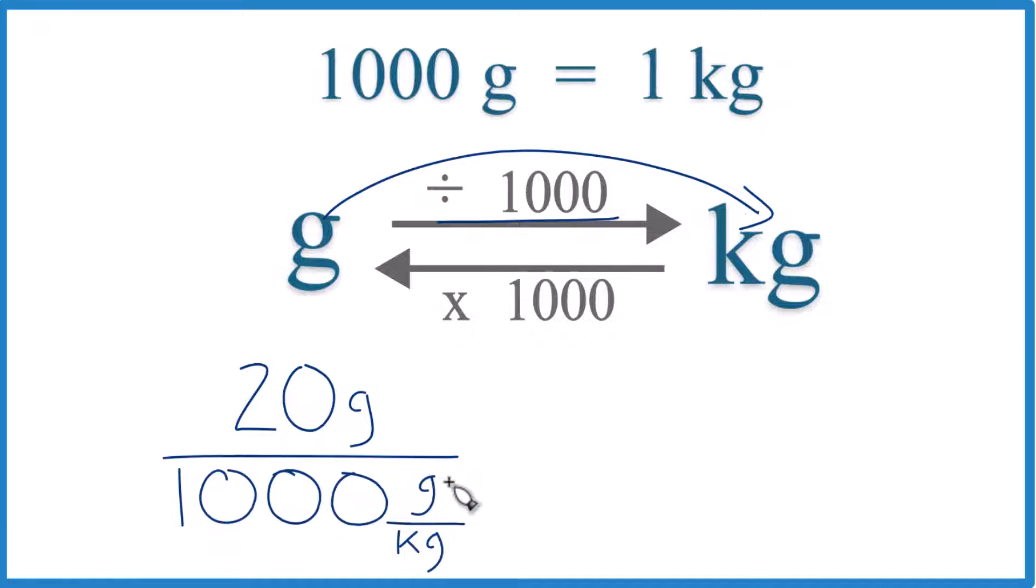And note, it's 1,000 grams per kilogram. Grams on the top and bottom, they cancel out. That leaves us with kilograms. So we know we did it right.